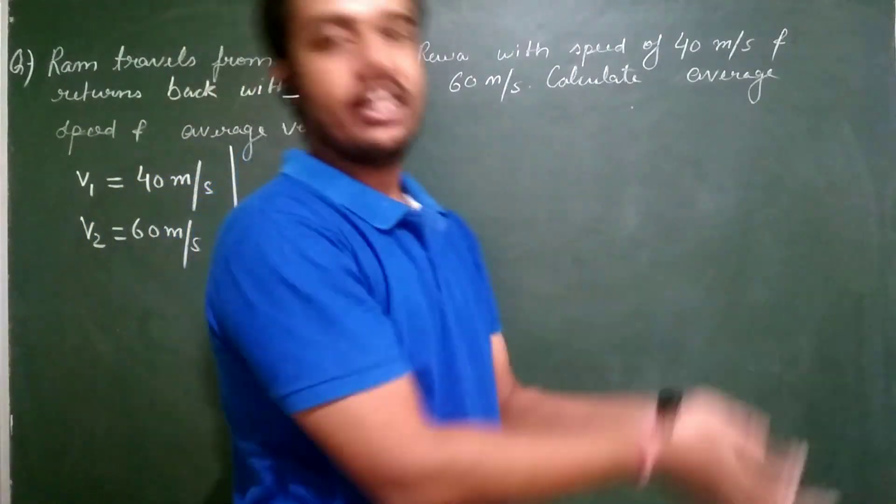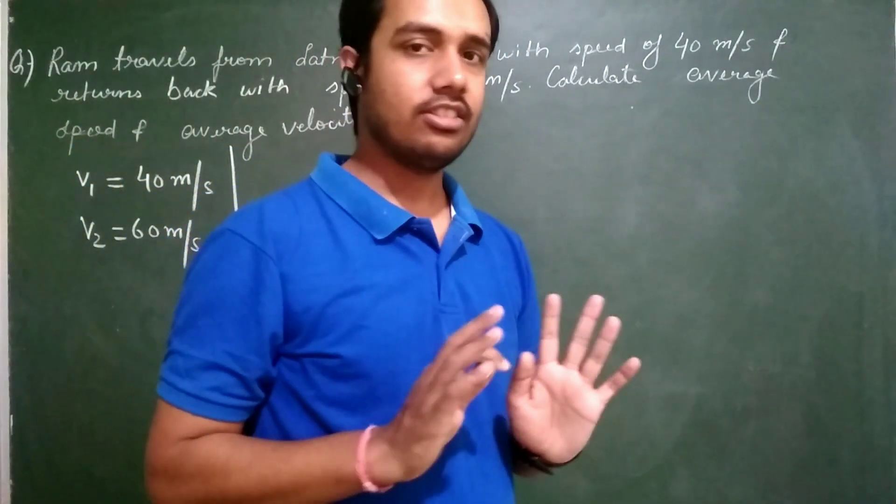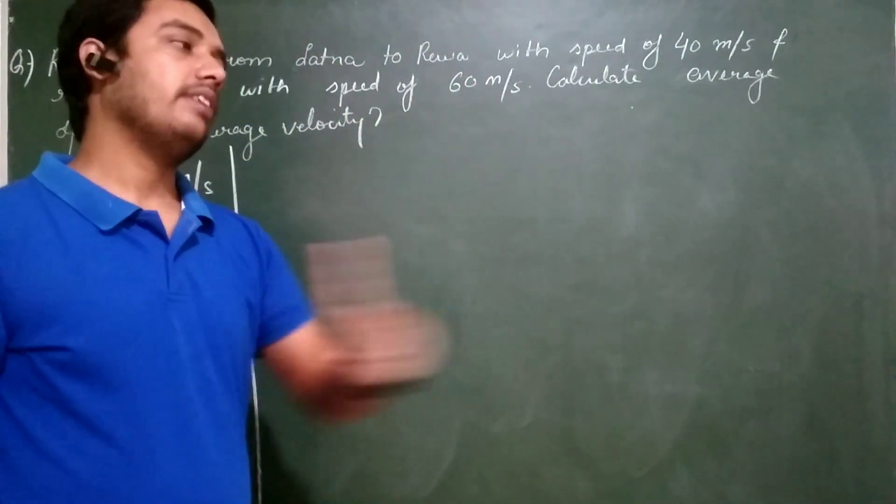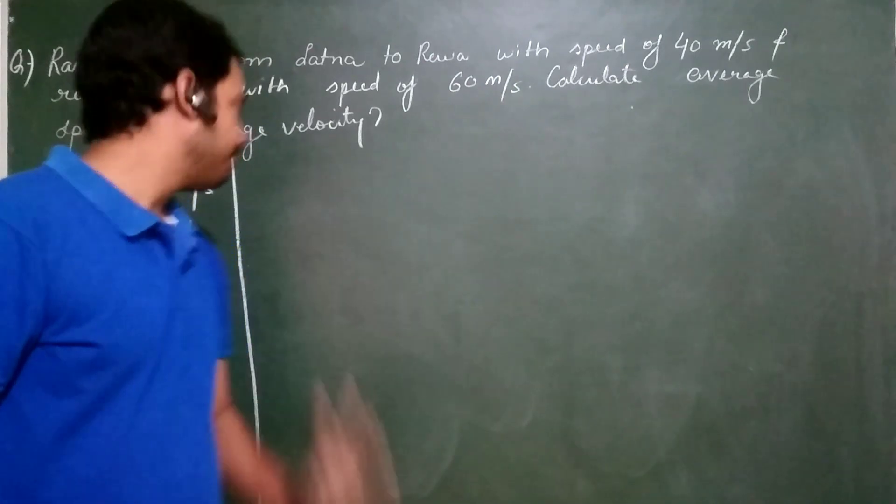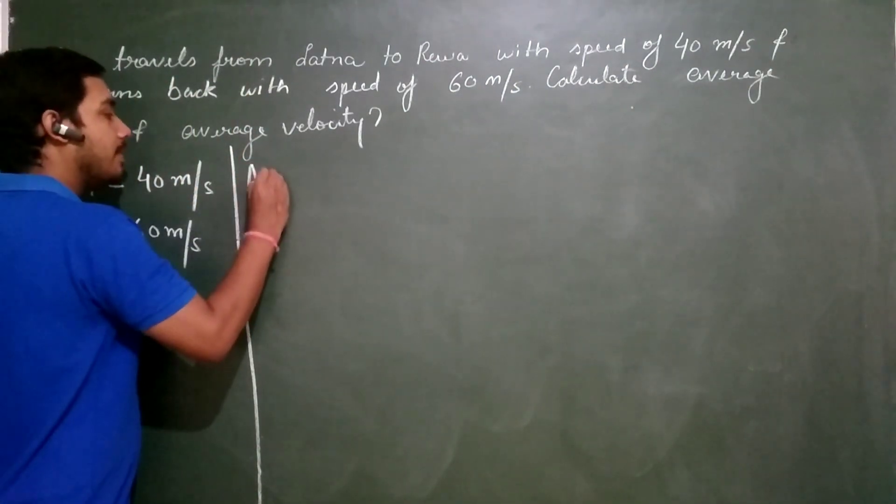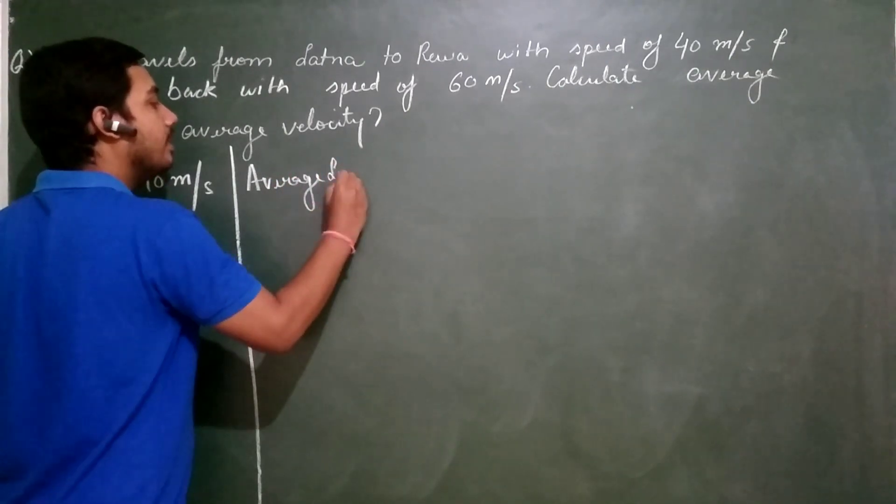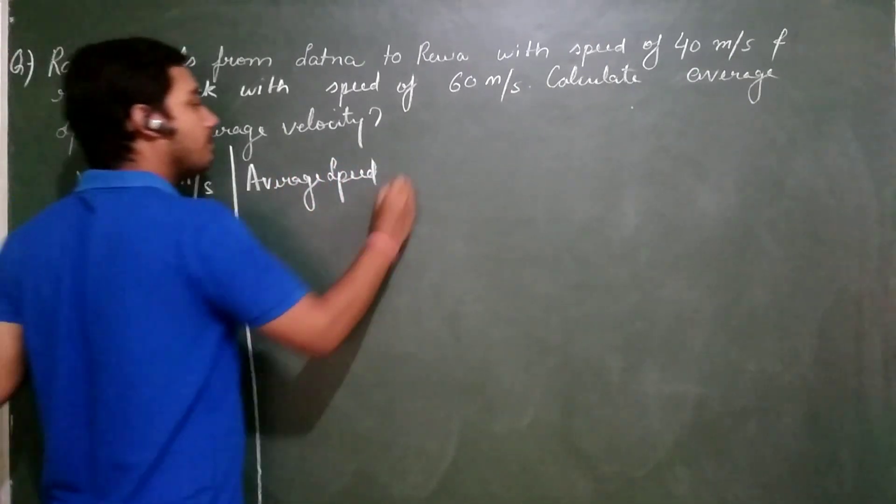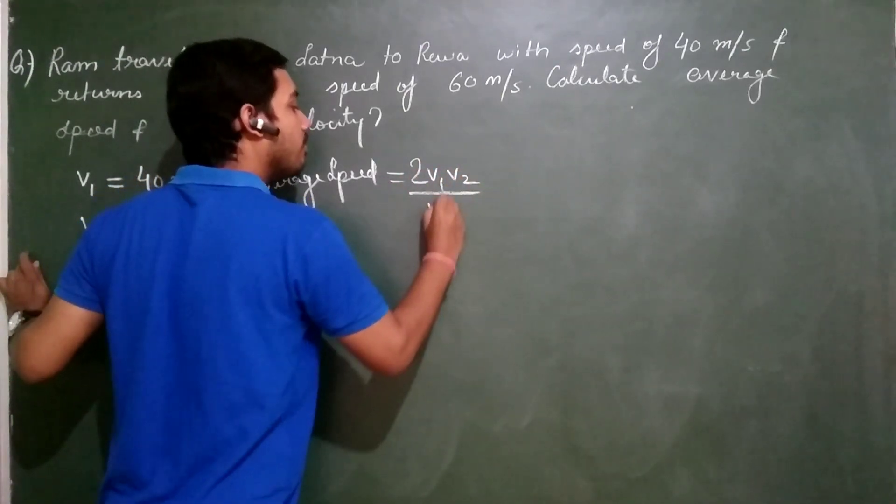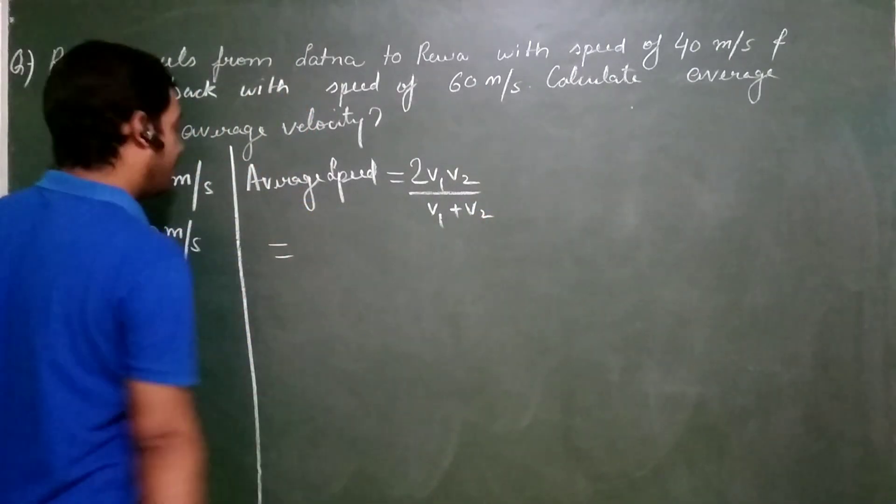So the first thing that I will calculate is average speed. Average speed. What is the formula? 2V1V2 upon V1 plus V2. Simply put the values.